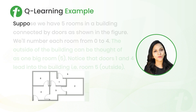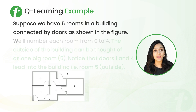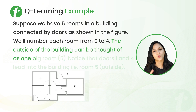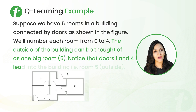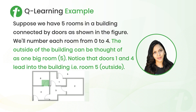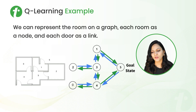Now let's move to the example to understand the whole process better. Suppose we have five rooms in a building connected by doors as shown in this figure. We number each room from 0 to 4, and the outside of the building can be thought of as one big room numbered five. Notice that doors 1 and 5 lead to the building exterior, room five. We consider these doors as actions and these rooms as states. We can represent each room as a node or state and each door as a link or action on a graph.